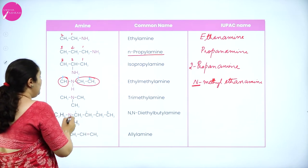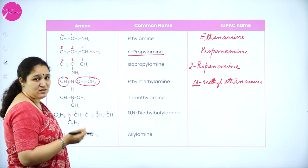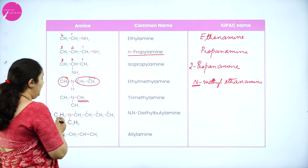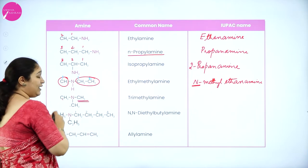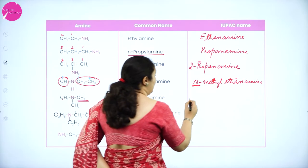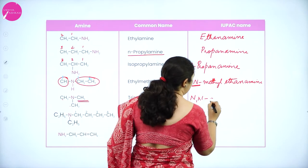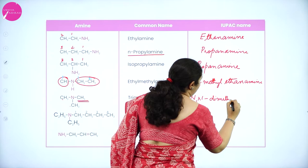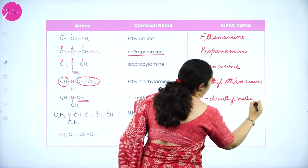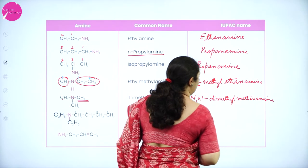Next, we have a nitrogen atom with all three CH3 groups. One goes as the root word — methanamine — and the other two go as prefixes, both attached directly to the nitrogen atom. So the IUPAC name is N,N-dimethylmethanamine.